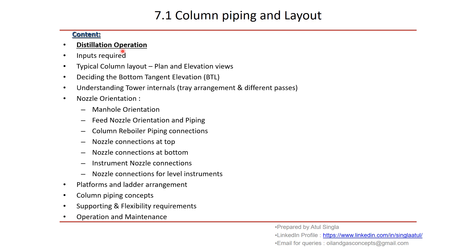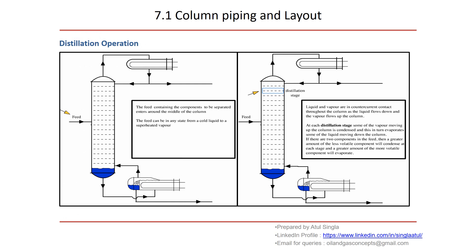Let us start with the inlet — the feed is entering from the middle of the column. Whatever components are there inside the feed, we have to separate them — that is the purpose of this column. This feed can be in the form of cold liquid or superheated vapor. Whatever is entering, we'll try to break it into different components at each temperature and pressure stage and separate them from the column — that will be the output.